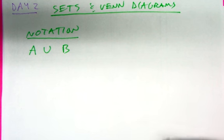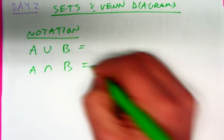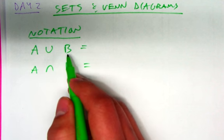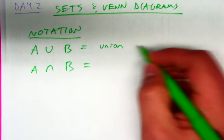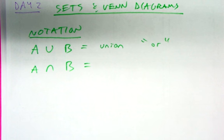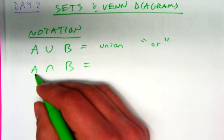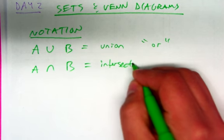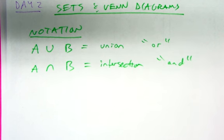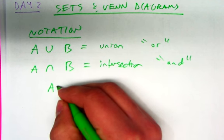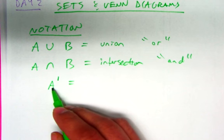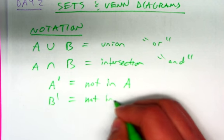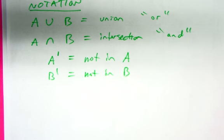Hopefully you did some of this in geometry. If you have sets A and B, when you see the U, that means union, which we typically refer to as 'or.' When you see A with an upside-down U and B, that means intersection, which we usually call 'and.' If you see a set with what looks like an apostrophe, we call that a complement — it just means whatever is not in A. A B complement means not in B. This is really all the notation you need to answer basic set questions.